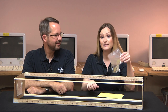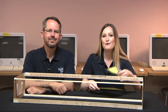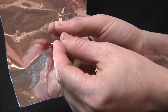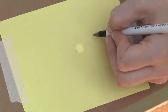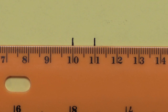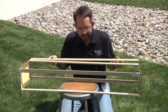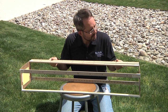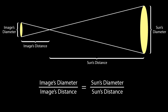All you really need is a piece of aluminum foil and a piece of paper. Poke a small hole in the foil and use it to project the sun's image onto the paper. Carefully measure the diameter of the sun's image and the distance from the foil to the paper. The ratio of the image's diameter to its distance to the pinhole is equal to the ratio of the sun's diameter to its distance to the pinhole.